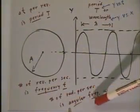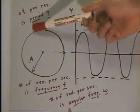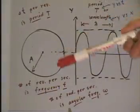The number of radians per second is what we call the angular frequency. Now, we want to remember that a complete cycle here is 2 pi radians.